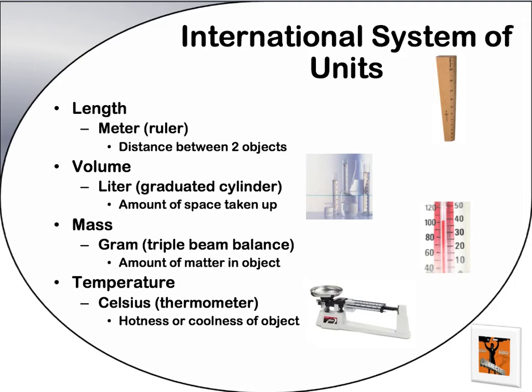I'm sure you're familiar with milliliter. Then you have Mass. Mass is the amount of matter in an object — the stuff that it's made of. When you want to measure the mass of an object, you use a triple beam balance, for example, in order to find the grams in that object.